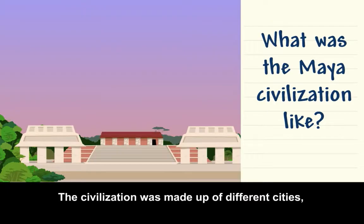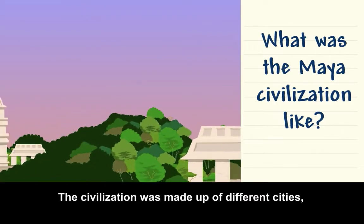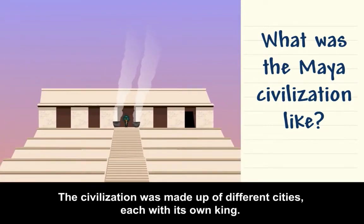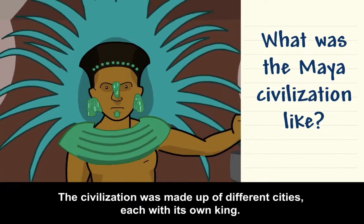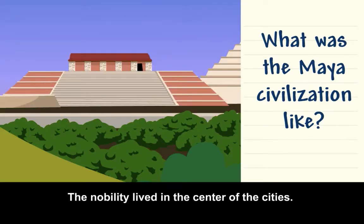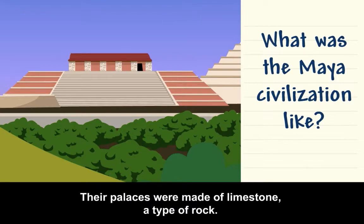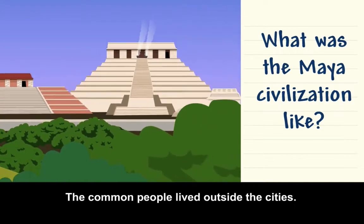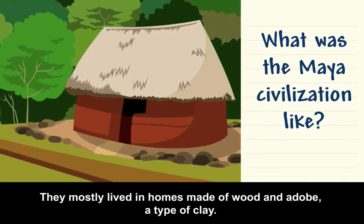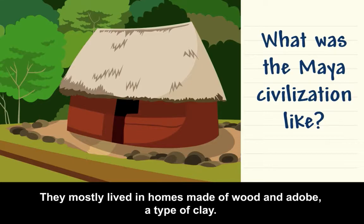The civilization was made up of different cities, each with its own king. The nobility lived in the center of the cities. Their palaces were made of limestone, a type of rock. The common people lived outside the cities, mostly in homes made of wood and adobe, a type of clay.